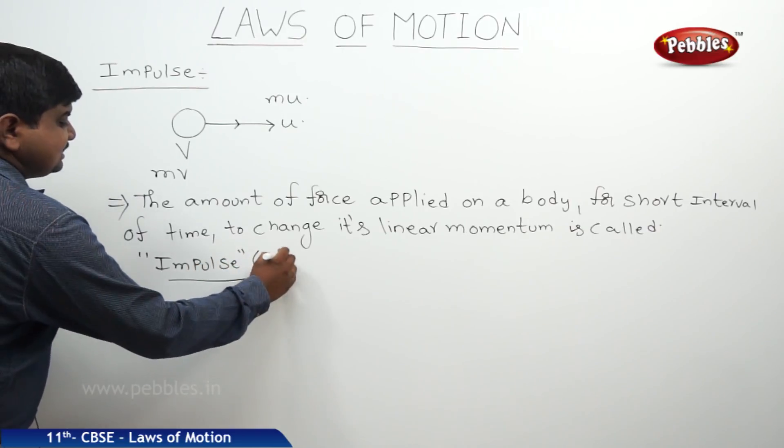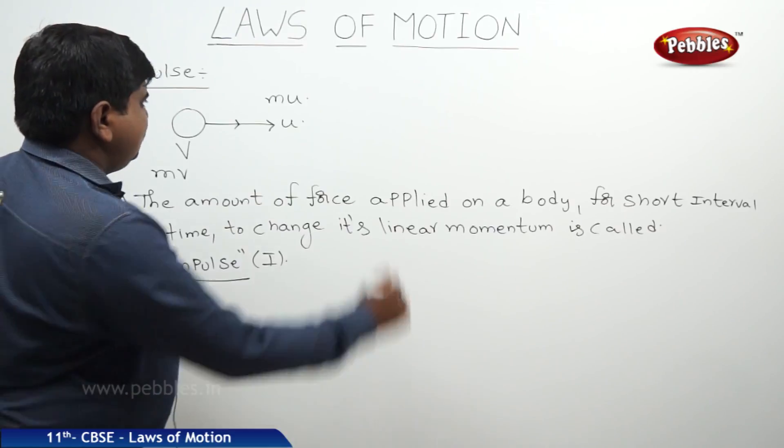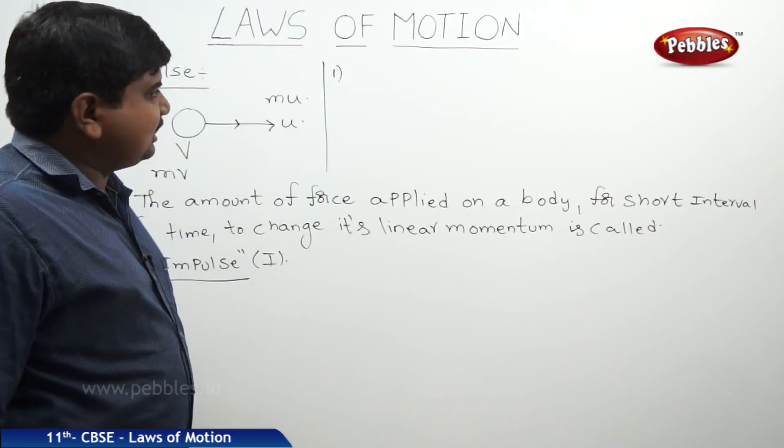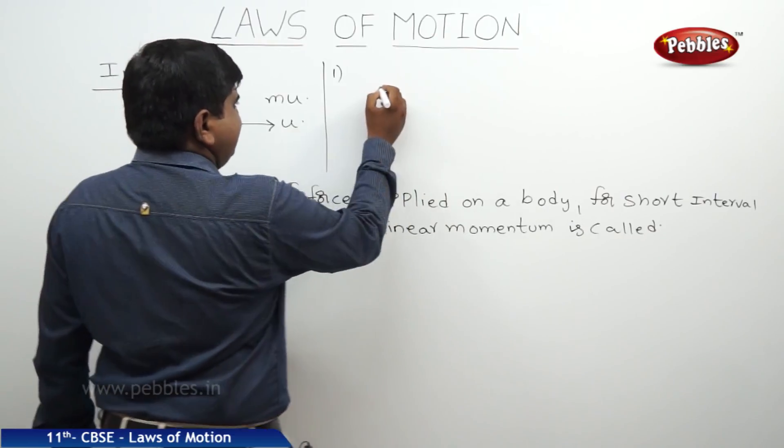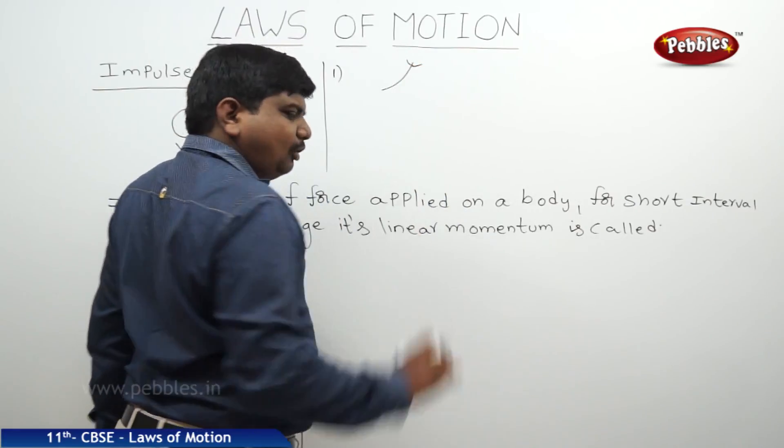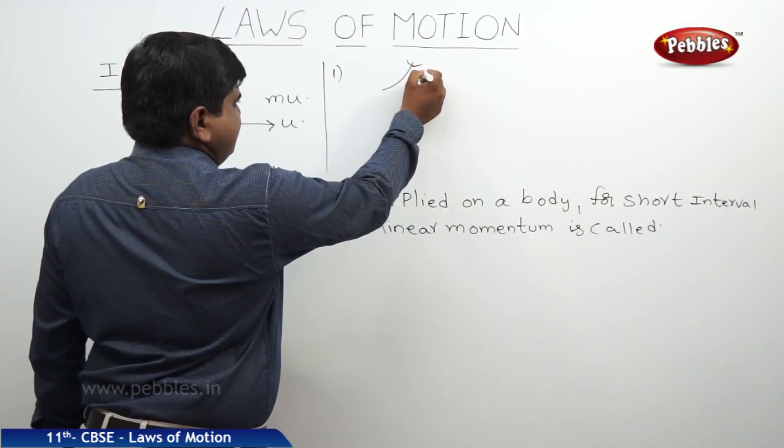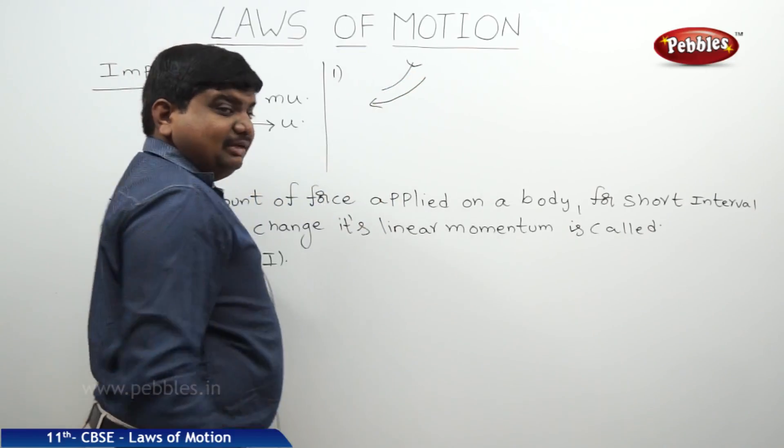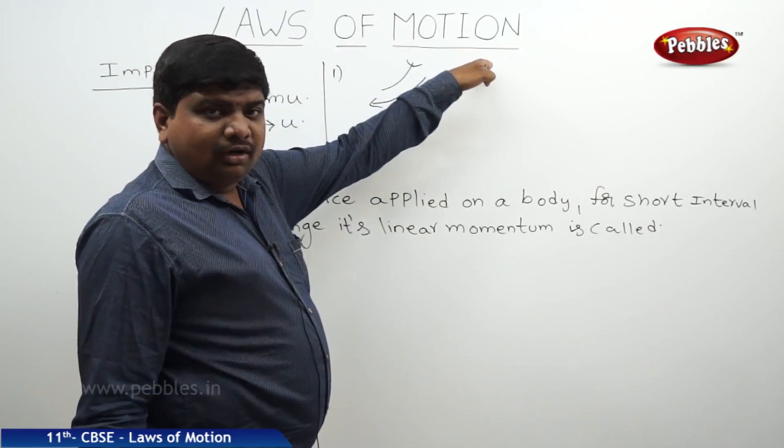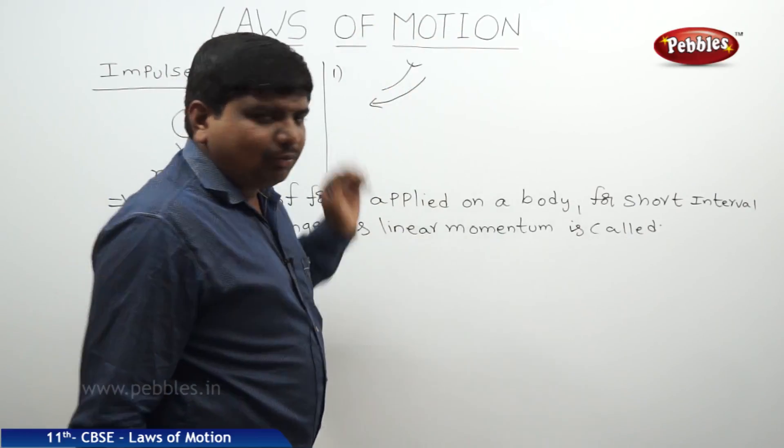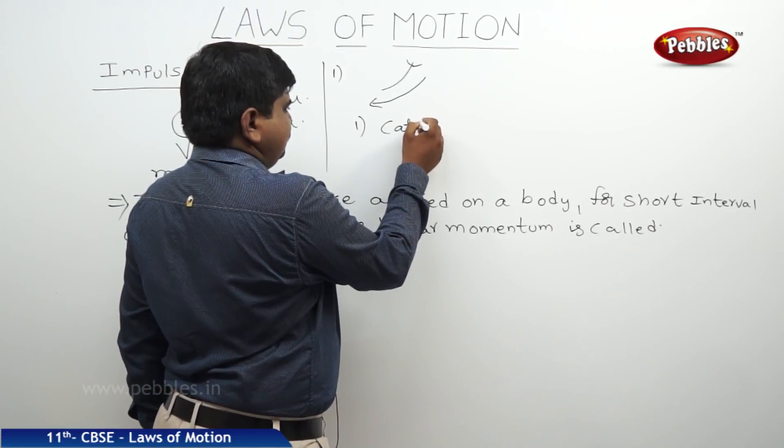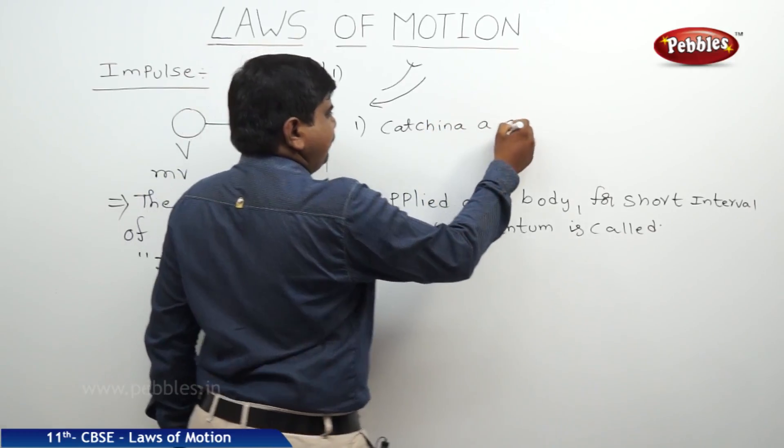The symbol of the impulse is capital I. What are the examples? While you are seeing a fielder who is catching a cricket ball, initially he stretches his hands forward, but while he is catching the ball, his hands will be moved back. That means he is applying a small amount of force for a short interval of time on the ball to change the momentum of the ball. This is one example: catching a cricket ball.